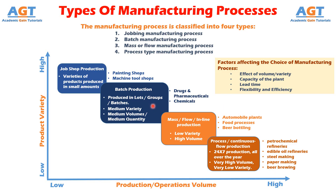Once the entrepreneur has made a final choice pertaining to the product design, production system and process, his next critical decision is the production planning and control decision.